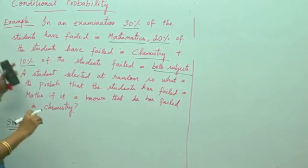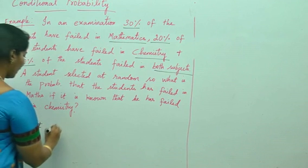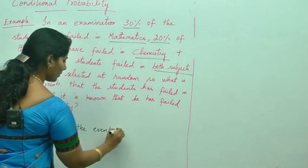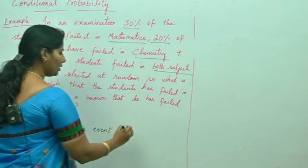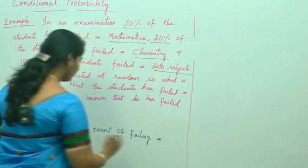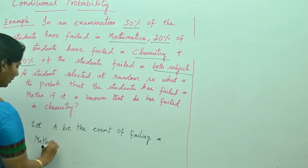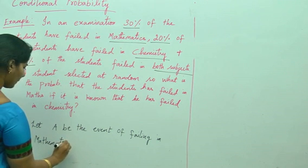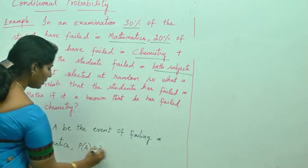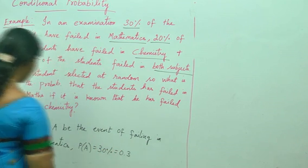You need to explain each and every event. Let A be the event of failure students in mathematics. That is P of A equals 30%, which is nothing but 0.3.